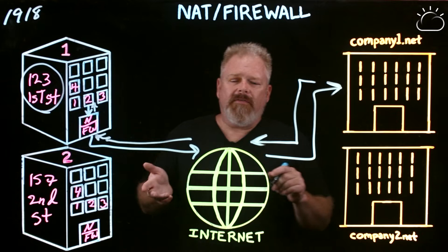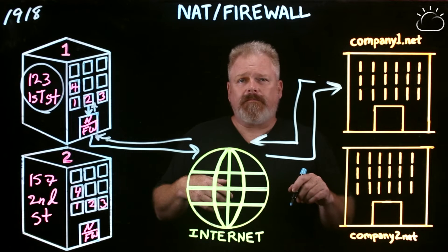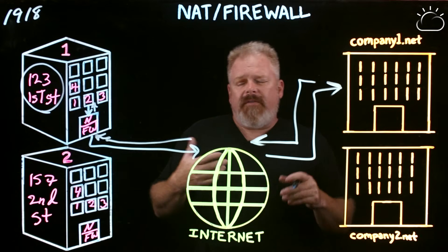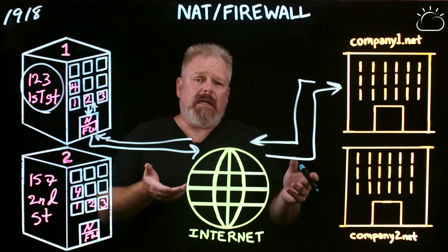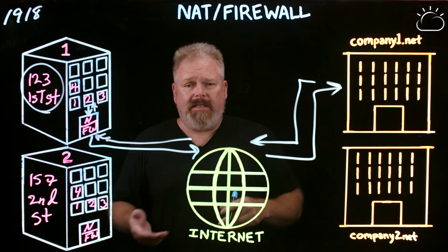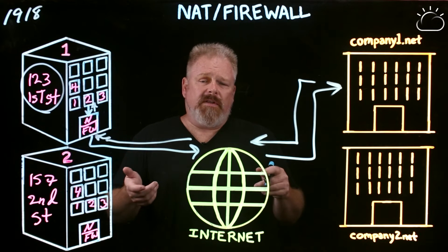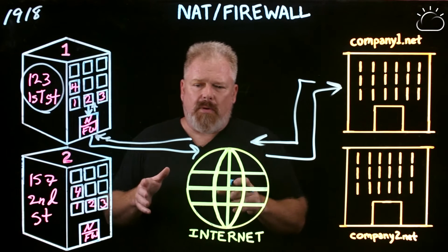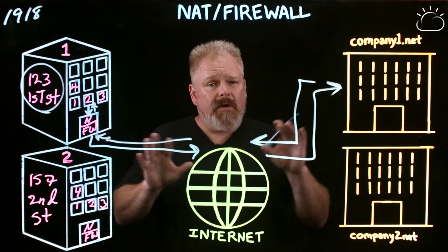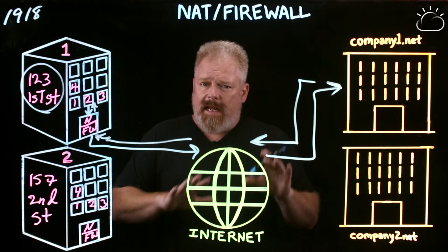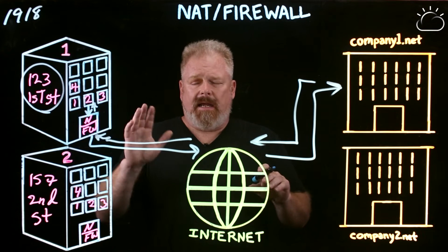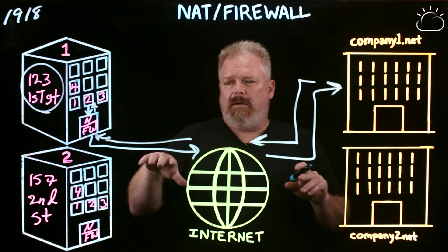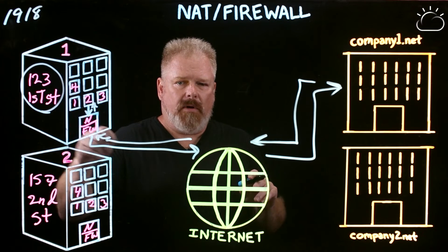Now that by itself is typically not enough. On the same device we'll have a firewall function. A firewall function is a security device or service appliance that actually monitors the network communication between some source and some destination, typically deployed across two different networks. In this analogy the firewall is deployed between the internal network and the external network, together with our NAT device.